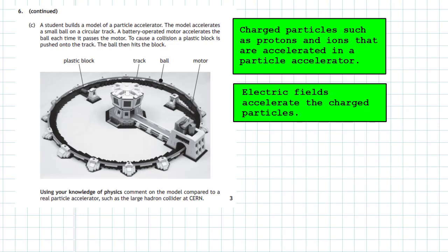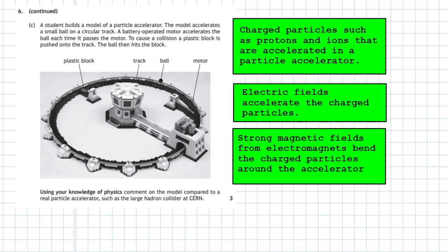Now the track itself in the model will guide the ball around, but in the real Hadron Collider it is strong magnetic fields from electromagnets that bend the charged particles around the accelerator.